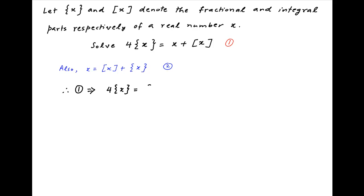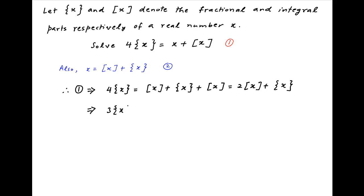This is equal to the integral part of x plus the fractional part of x plus the integral part of x, which equals 2 times the integral part of x plus the fractional part of x. This implies that 3 times the fractional part of x is equal to 2 times the integral part of x, which gives us: the integral part of x equals 3/2 times the fractional part of x. Let's call this result 3.